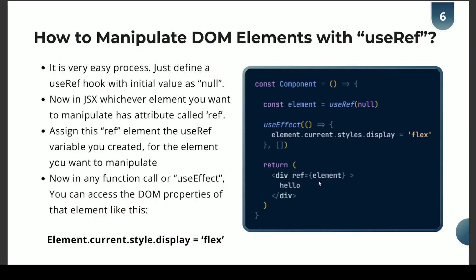Now in a function call or useEffect — any function call triggered by a click event or when the component first renders — we can change the element. I picked useEffect as a good place to demonstrate. Inside useEffect, we can change the element's properties using element.current, and then access attributes like style.display — here I've assigned it to flex.